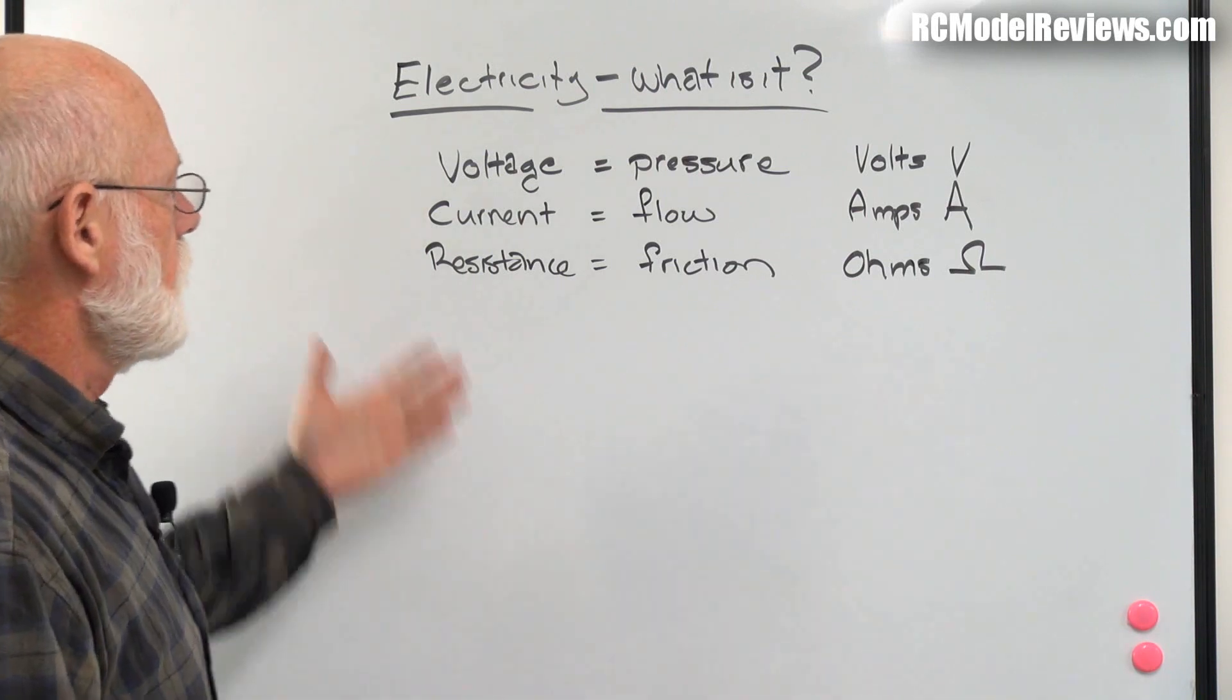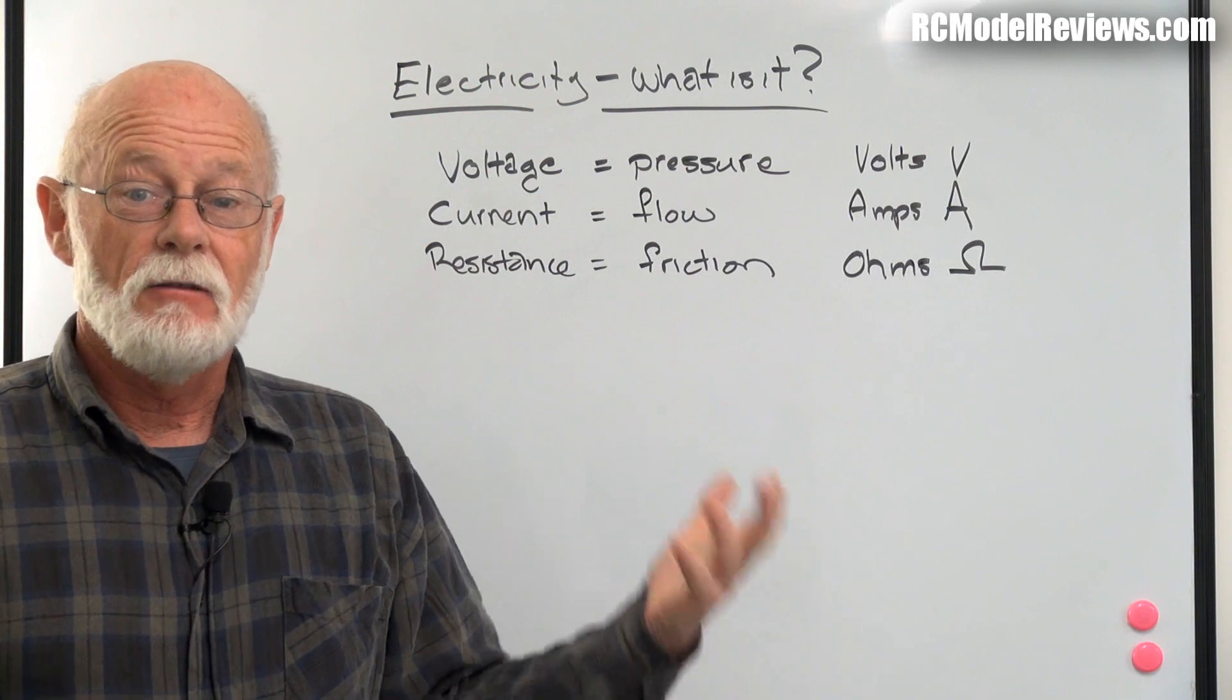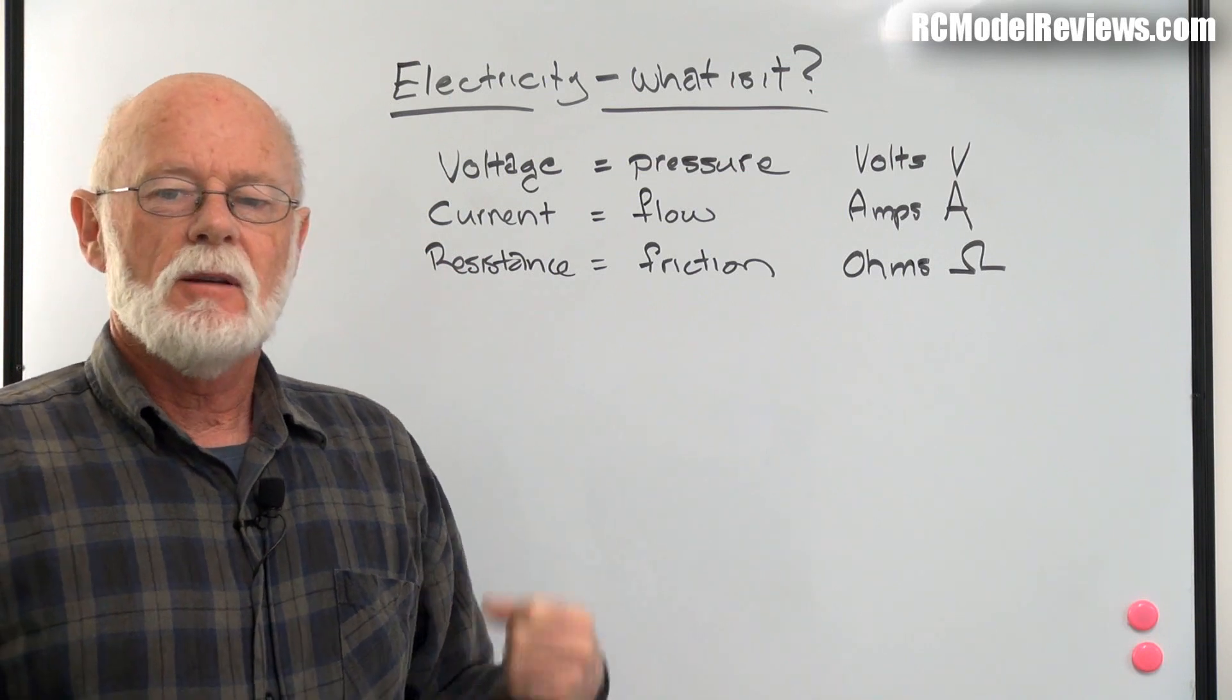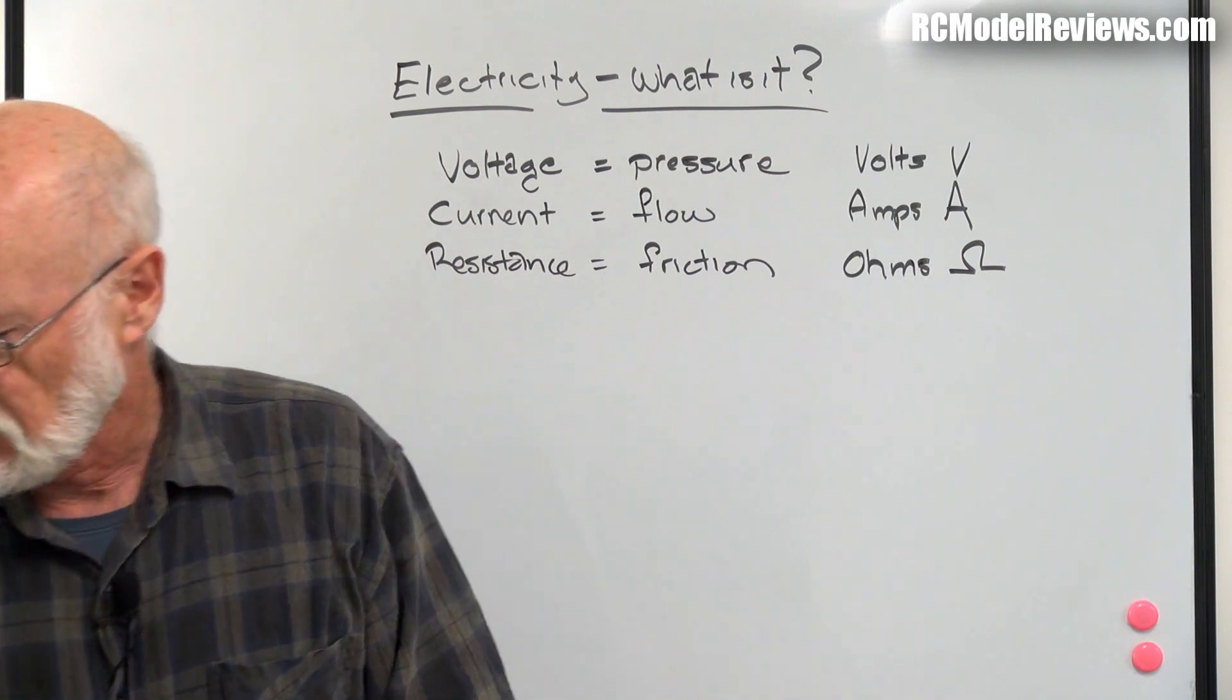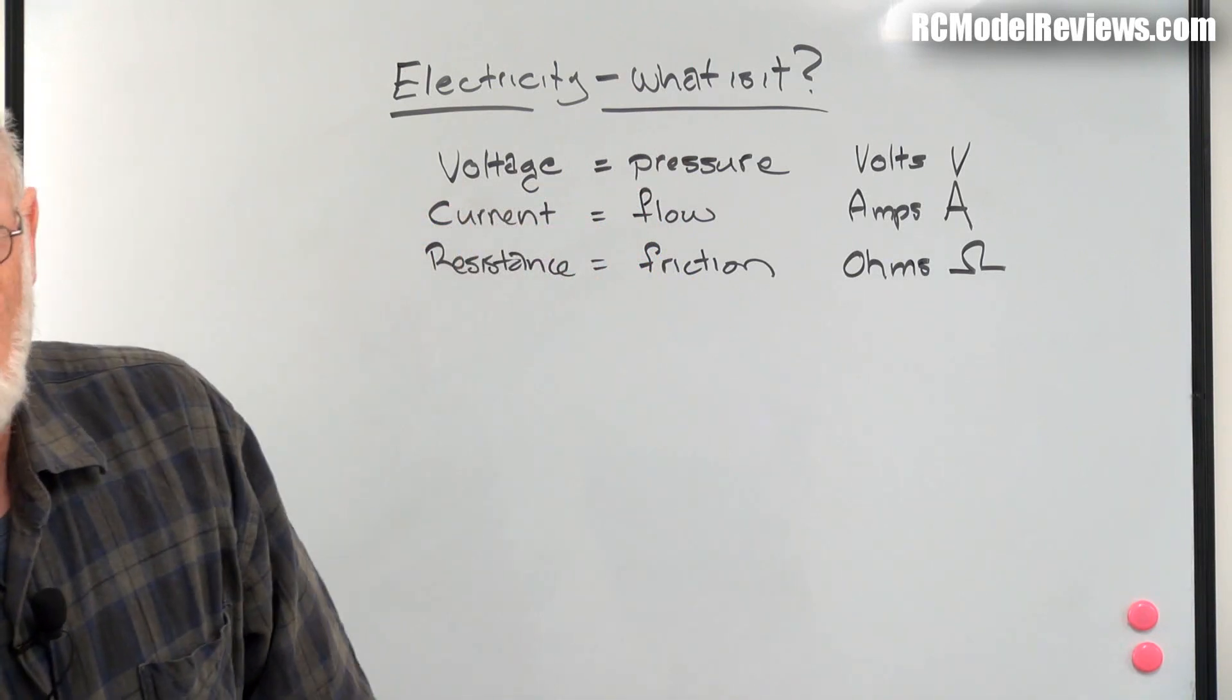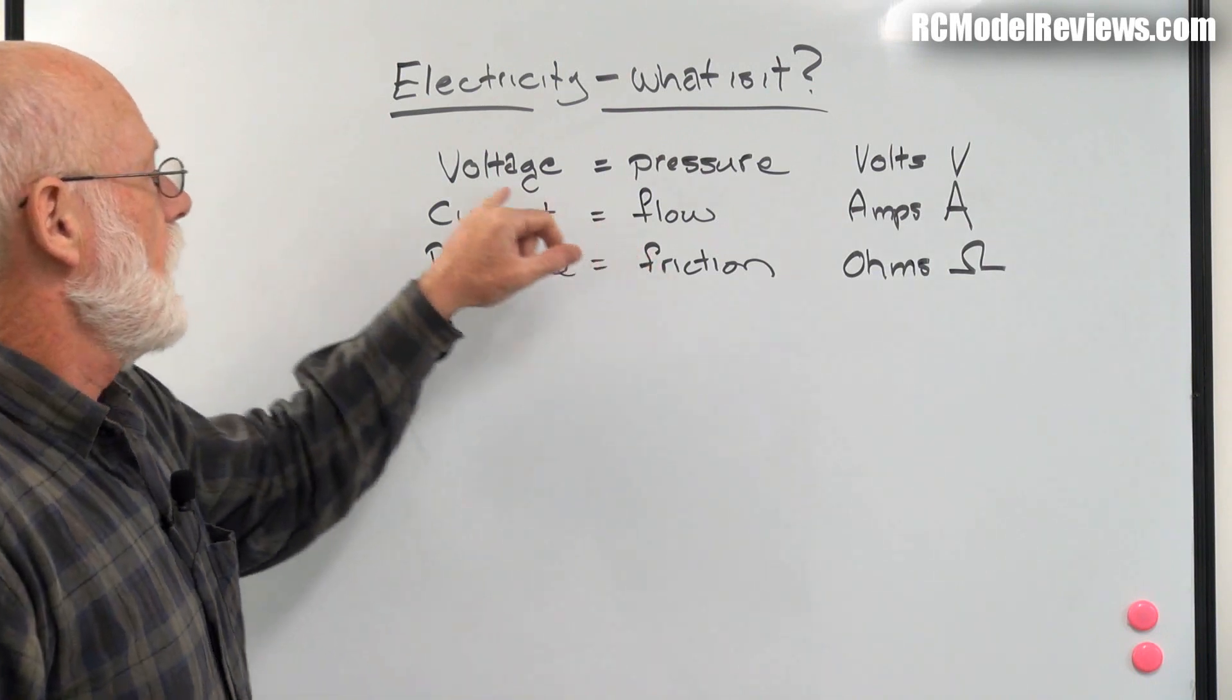Electricity is the flow of electrons - it's as simple as that. When we're dealing with electricity, like anything, we have to be able to measure aspects of it. Just like physical objects have height and width, we can measure quantities of electricity.